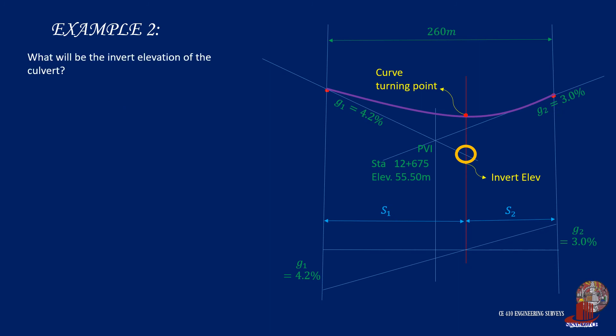Start with the location of the lowest point of the curve. From the grade diagram, it is noted that the lowest point will appear at the latter half of the curve. We can prove that with the formula of S1 where it is computed as 151.67 meters. The remaining distance S2 is taken as 108.33 meters.